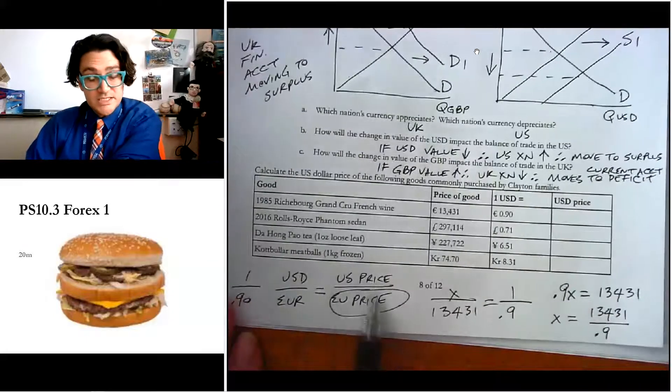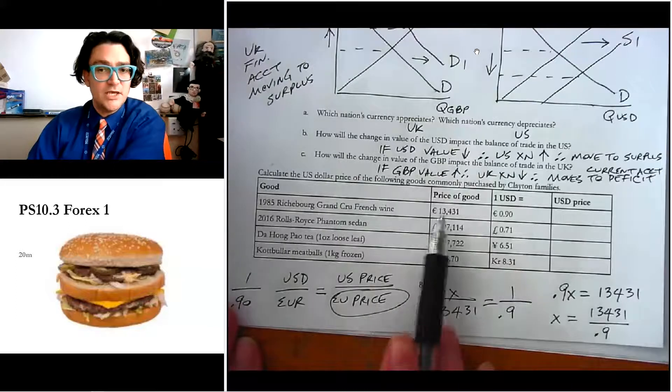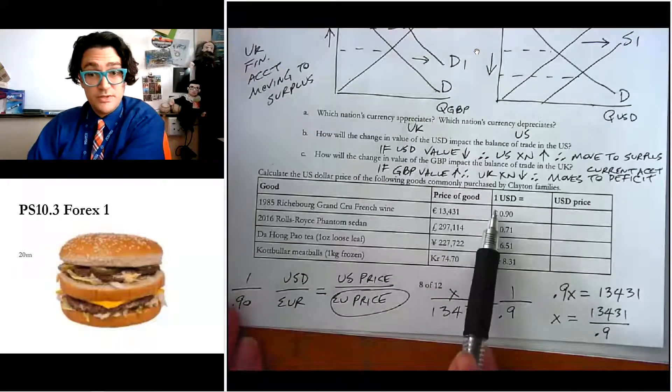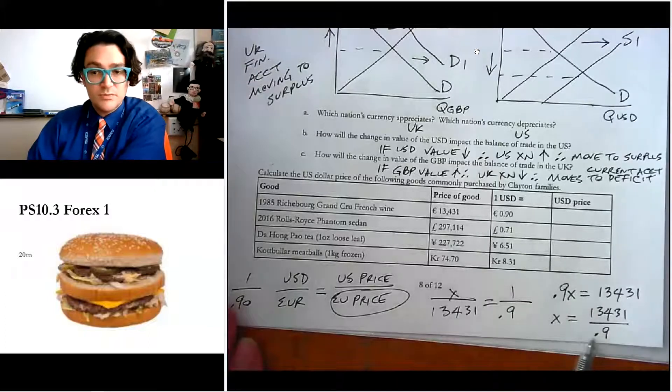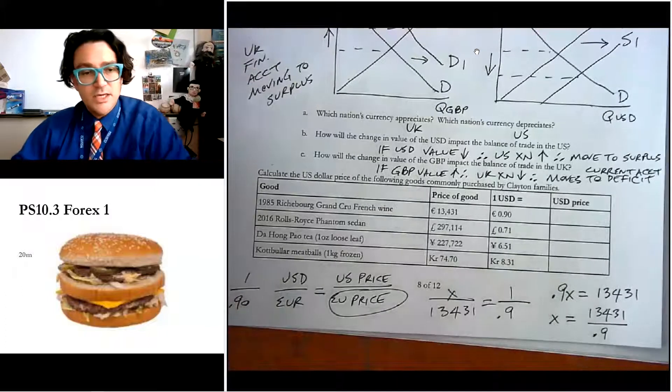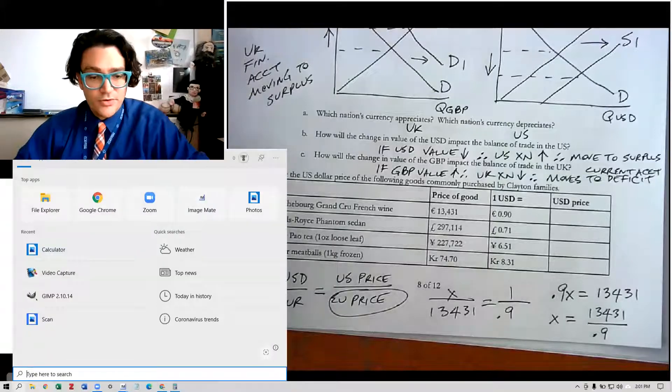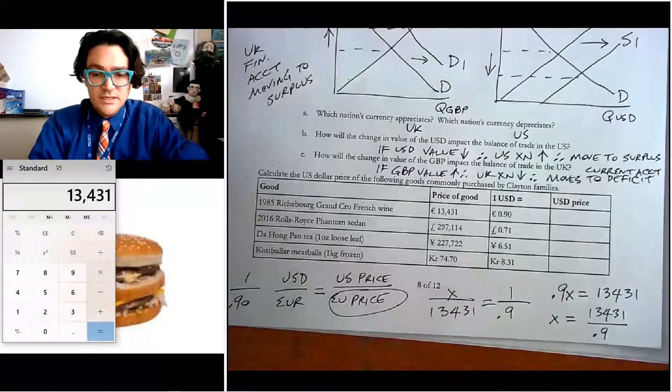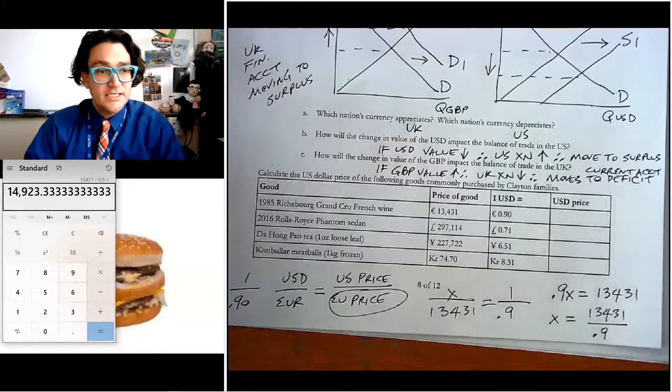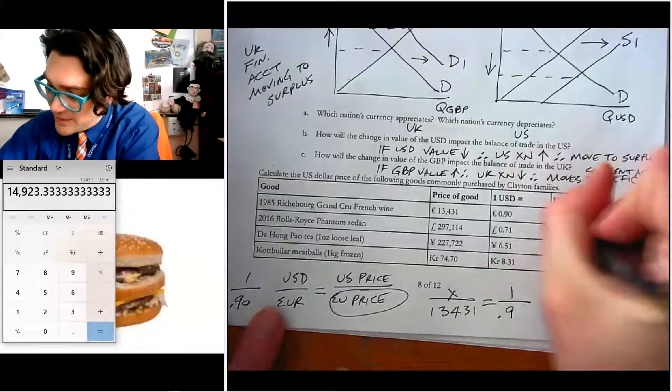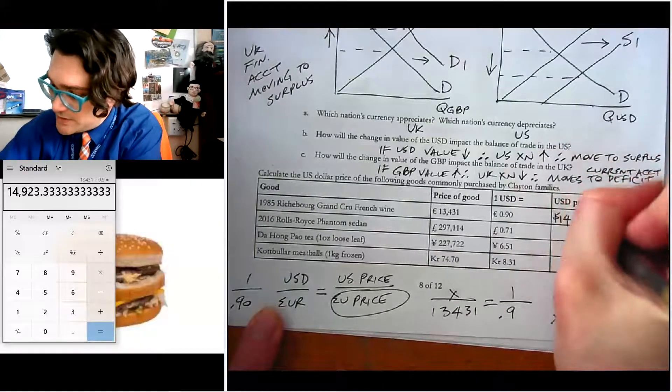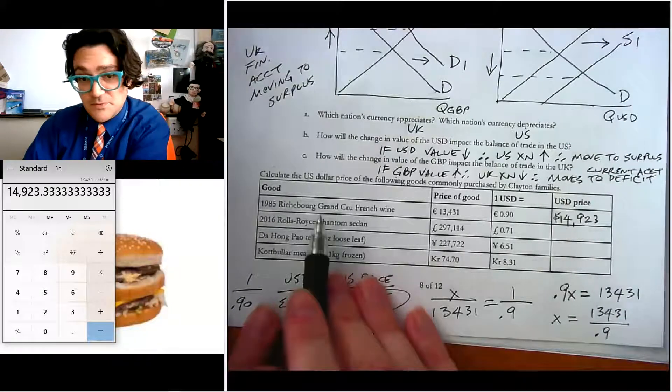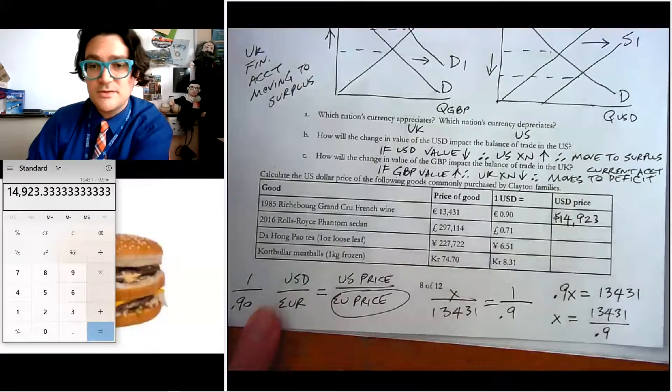So we're going to use the calculator and do that. 13.431 divided by 0.9 is $14,923 and a couple pennies. So that is a heck of an expensive bottle of French wine, a $15,000 bottle of wine.